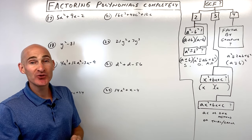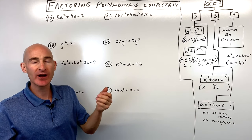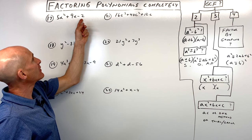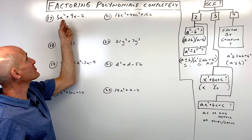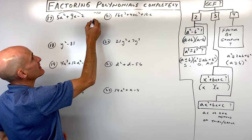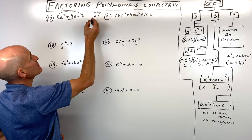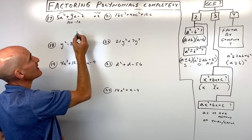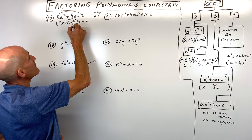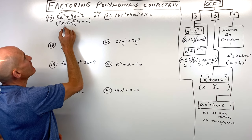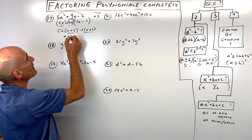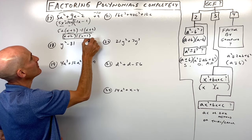If these are too easy, go to the last 20 or 25 problems in this video. Number seventeen has three terms, leading coefficient not 1, no greatest common factor. Let's do the AC method: 5 times negative 2 is negative 10. What multiplies to negative 10 but adds to positive 9? That's 10x and negative 1x. Split the middle term and bring down the first and last terms. Factor by grouping: factor out 5x, and factor out negative 1. Notice we have x plus 2 in common — factor it out to get x plus 2 times 5x minus 1.